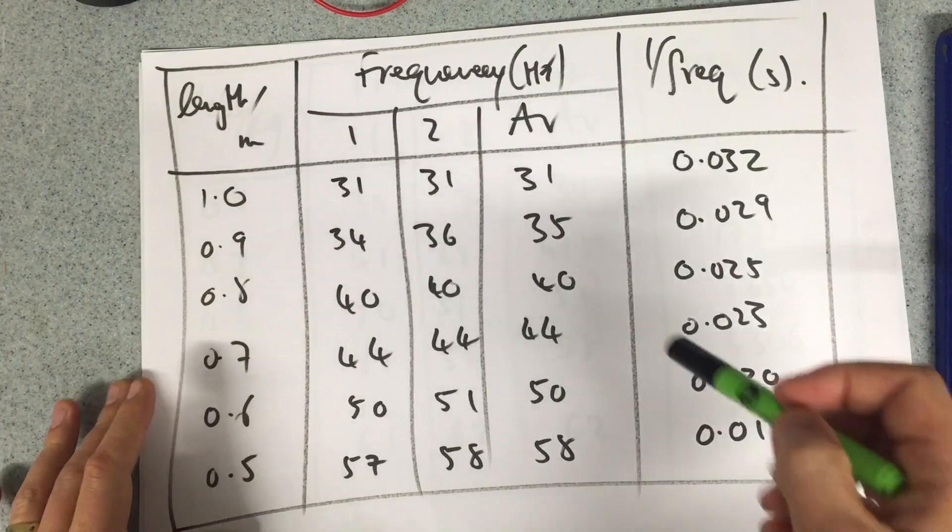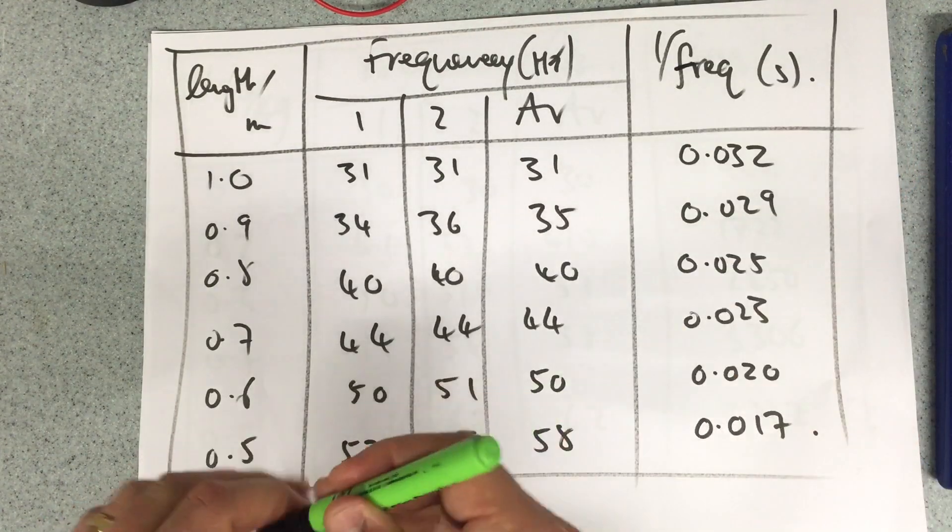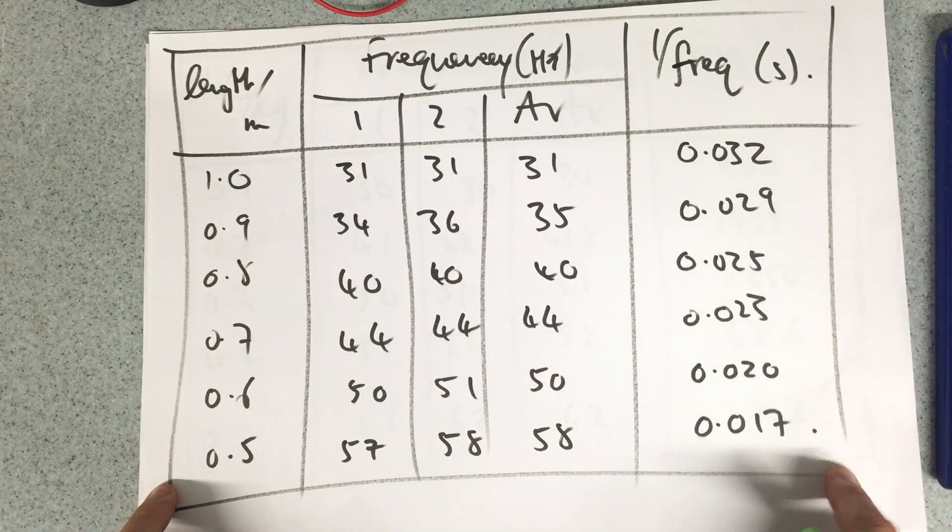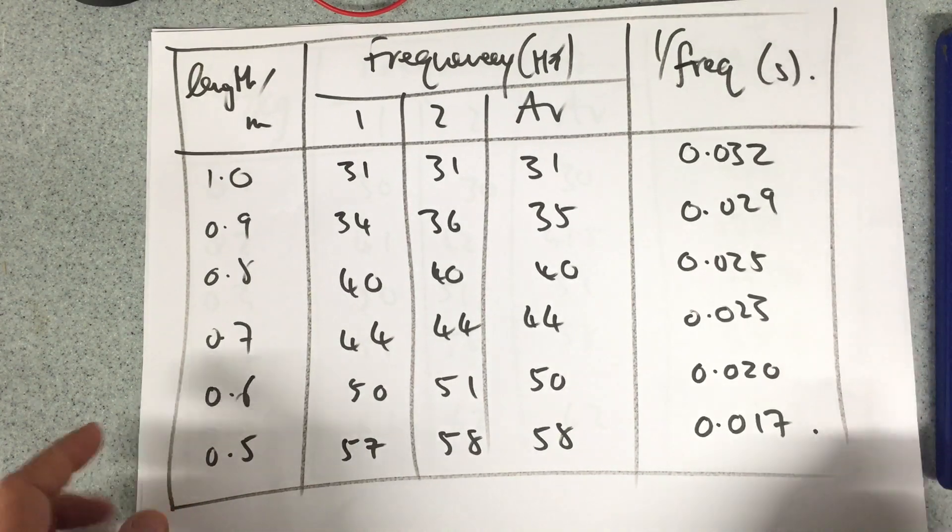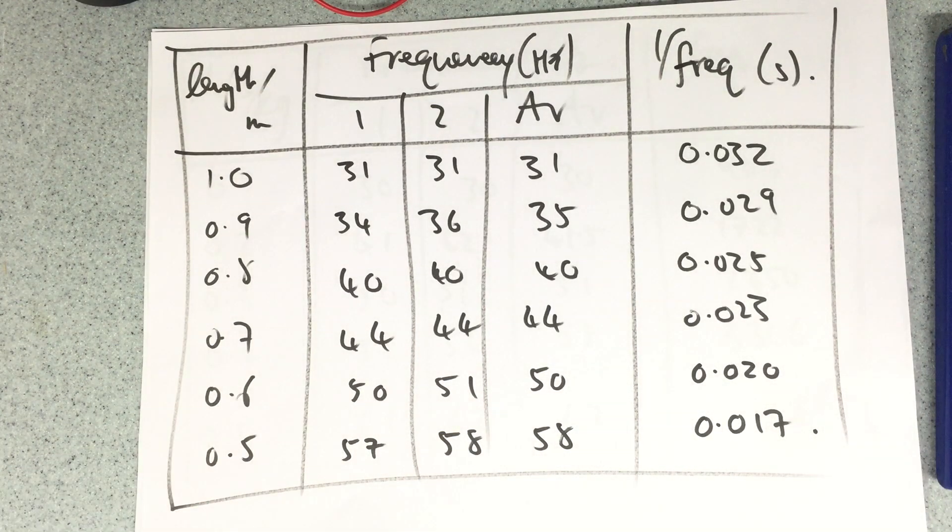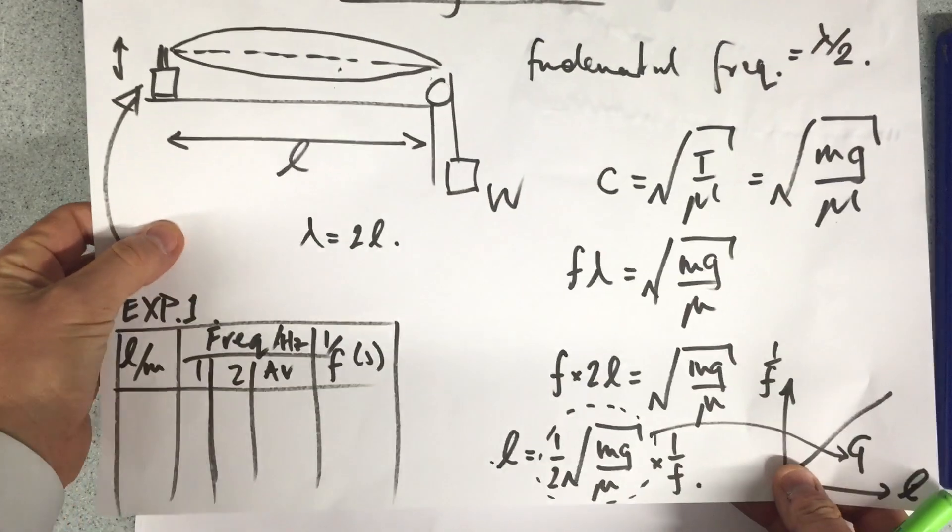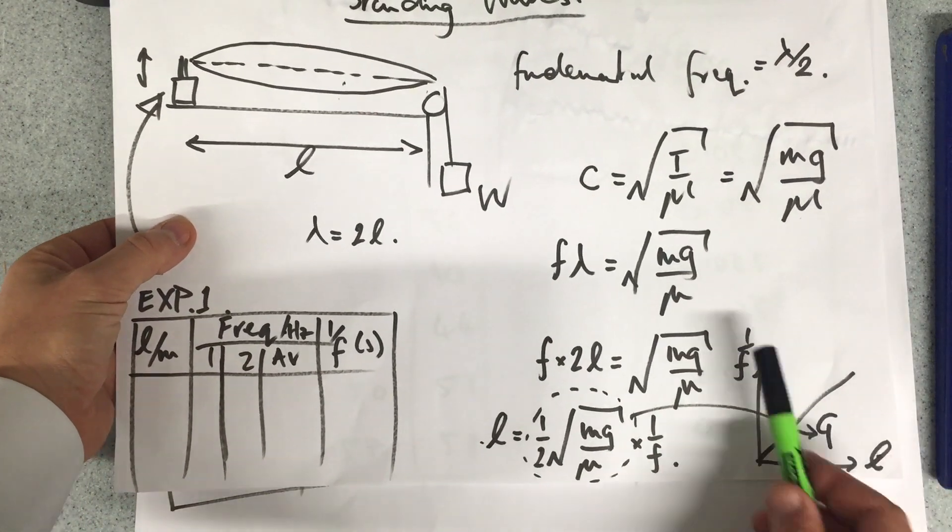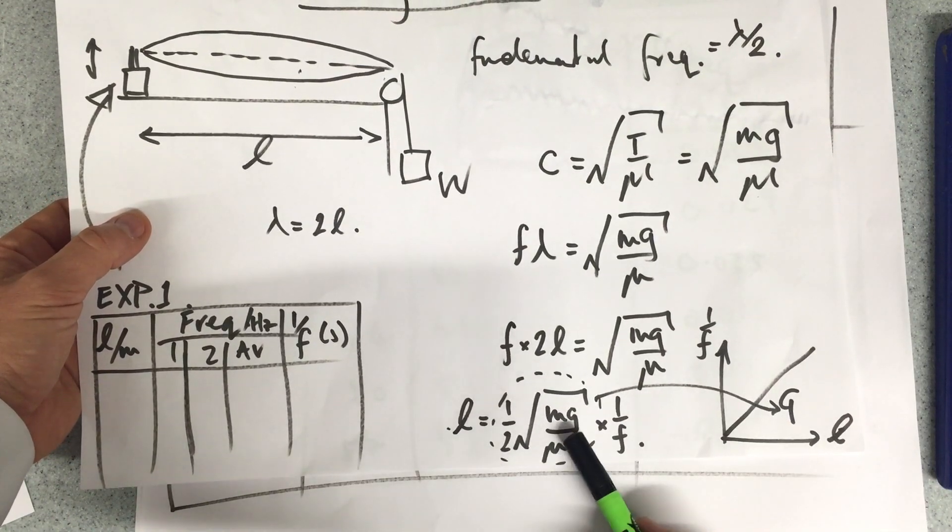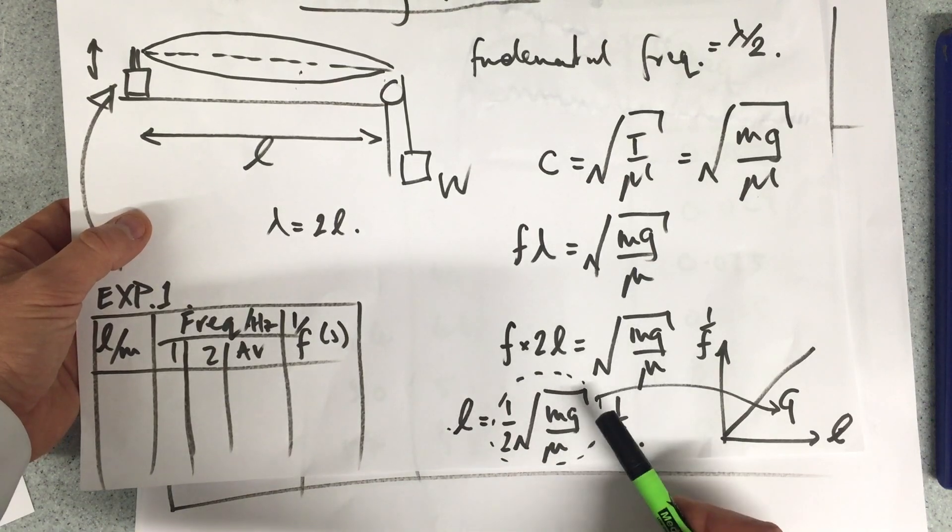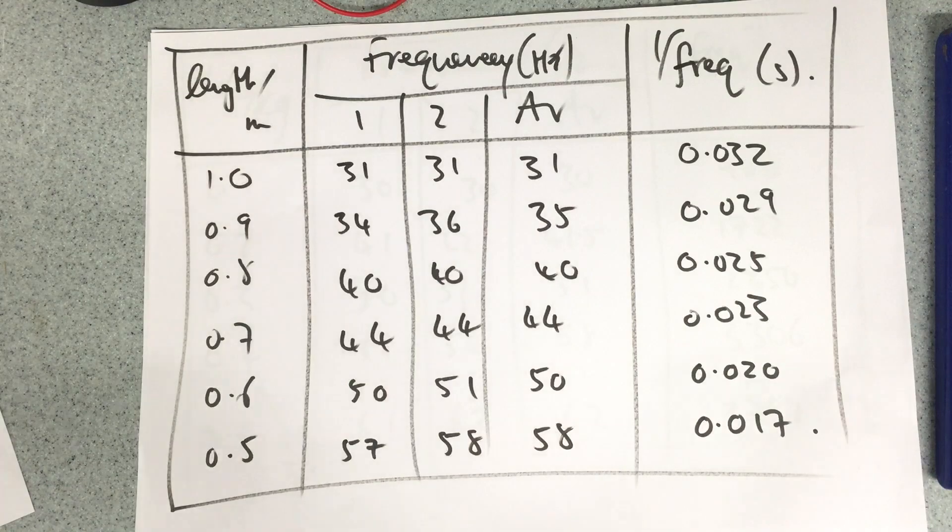Here are the results for the length and the frequency. I took one over the frequency, and I'll give you an opportunity to copy those down. Remember, what I'm achieving, what I'm hoping to achieve from this, is looking at how 1 over f against the length, and my gradient will be equal to that. If you want to hit pause here and copy that down again, remind yourself of it. There are your results that will hopefully prove that.